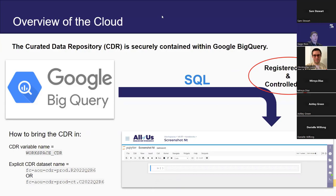So overview of the cloud: the curated data repository, or the CDR, is securely contained in what is called Google BigQuery. This is a secure web-based platform that holds all of our data. The great thing about the CDR is this is where you access both the registered tier and controlled tier data, all coming from the same place no matter what workspace you're in or what type of data access you have.